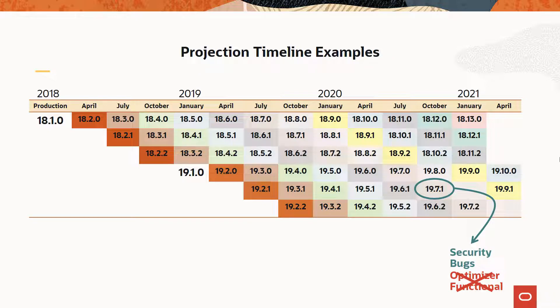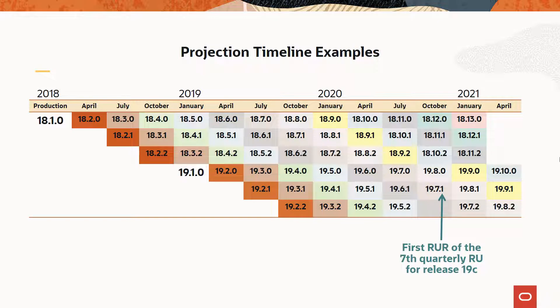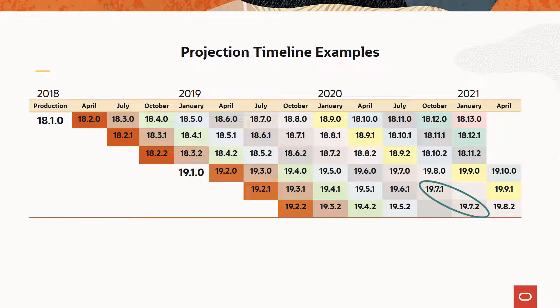Installing an RUR will change the third field of the database release. So, for example, 19.7.1 would designate the first RUR of the seventh quarterly RU for release 19c. It's important to mention that there is no third RUR planned — the model allows only two RURs per RU. Afterwards, you have the option to either get the most recent RU or a later RUR based on a newer RU.